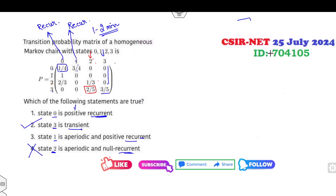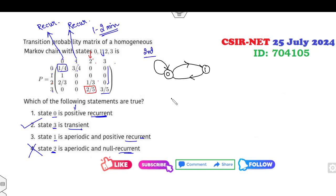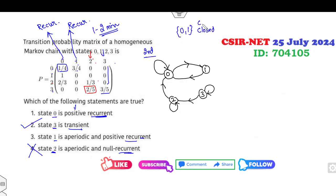Now let's look at Method 2: draw the transition diagram. Transitions: 0→0, 0→1 possible; 1→0 possible; 2→0 possible; 2→1 not possible; 2→2 possible; 2→3 not possible; 3→2 possible; 3→3 possible. Clearly, states 0 and 1 form a communicating class.